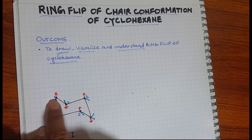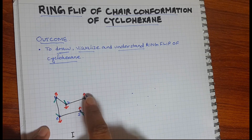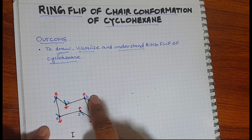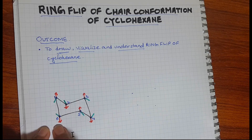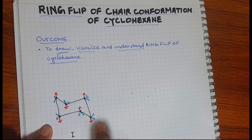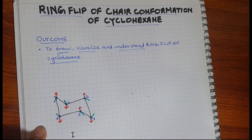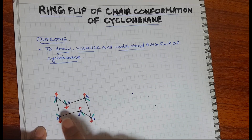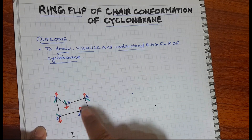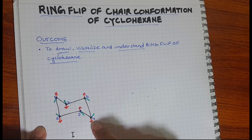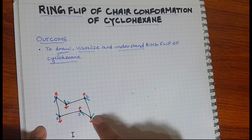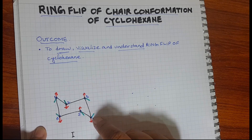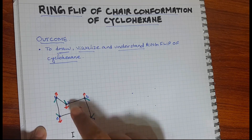Carbon number 1, 3 and 5 are upper carbons making the upper plane, whereas carbon numbers 2, 4 and 6 are lower carbons making the lower plane. Out of 6 axial bonds, 3 are shown upward and 3 are shown downward, whereas equatorial bonds are also shown respectively.